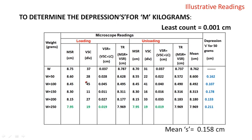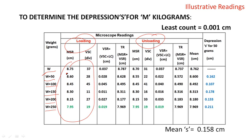After which, you have to proceed with the unloading part. You can note the readings as shown in the tabular column. In the tabular column, you can find the loading part and the unloading part. In the loading part, the experiment is done for W, W+50, W+100, W+150, W+200, and W+250, noting down the corresponding MSR and VSE values to calculate the VSR and total readings for the loading part.